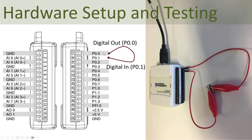When I set the output to true, the input should be true. When I set it to false, the input should be false. These are wired directly together in a so-called loopback test, meaning when I output a signal — either 0 volts (false) or 5 volts (true) — the same value should flow back into the digital input pin. So let's go to LabVIEW and see how we can create this application.